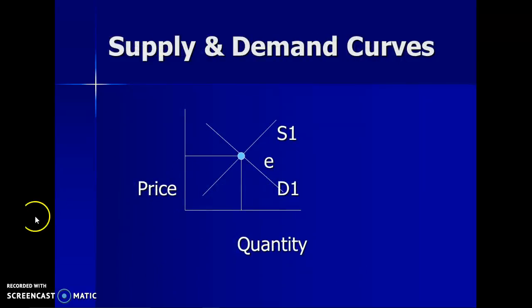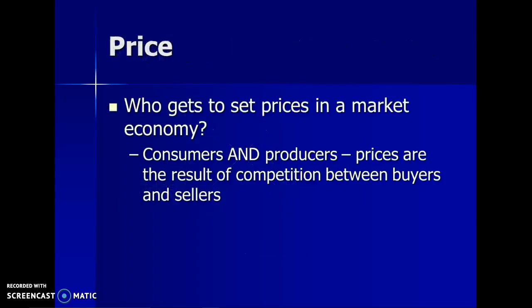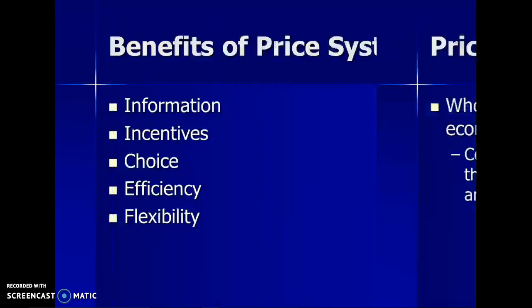On the supply and demand curve, point E is your equilibrium price, sometimes called the market clearing price. This is where supply and demand meet. In a market economy, prices are set by supply and demand — consumers and producers. Prices are the result of competition between buyers and sellers.